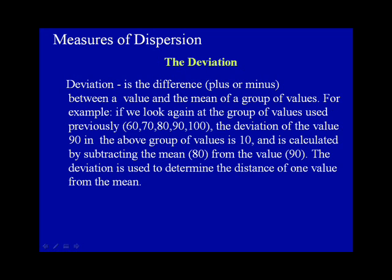The deviation is the difference, plus or minus, between a value and the mean of a group of values. For example, if we look again at the group of values used previously — 60, 70, 80, 90, and 100 — the deviation of the value 90 in the above group of values is 10, and is calculated by subtracting the mean, 80, from the value, 90. The deviation is used to determine the distance of one score from the mean.